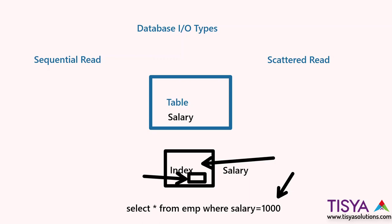Corresponding to the entries found in the index blocks, it would then have to read the rows from the table. So the query first reads the index blocks, then goes to the table and fetches the corresponding rows based on the row IDs found in the index blocks for salaries equal to 1000. This is what an index lookup looks like, and it goes through what is called a sequential read.